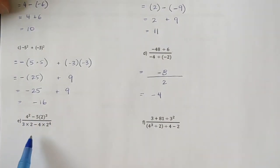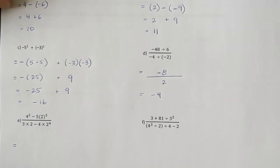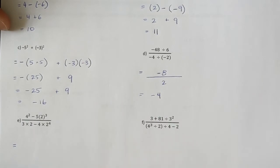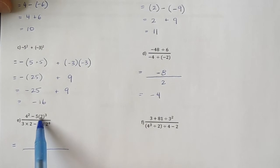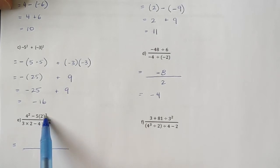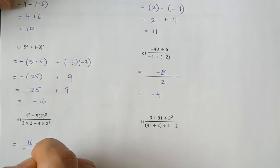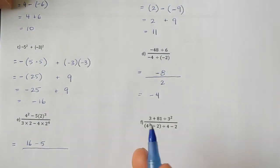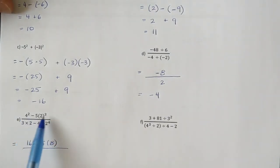The next question looks complex, but I'll take it one step at a time, focusing on the numerator first. In the numerator I have exponents: 4 squared is 16, minus 5 times 2 cubed. 2 to the power of 3 is 2 times 2 times 2, which equals 8. That covers the numerator. Now looking at the denominator: 3 times 2 minus 4 times 2 to the power of 4, and 2 to the power of 4 is 16.